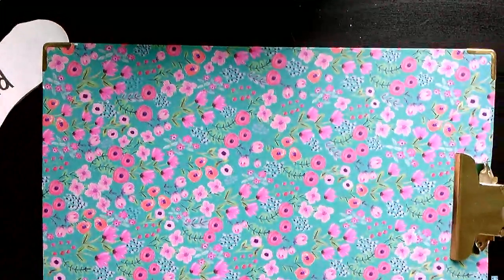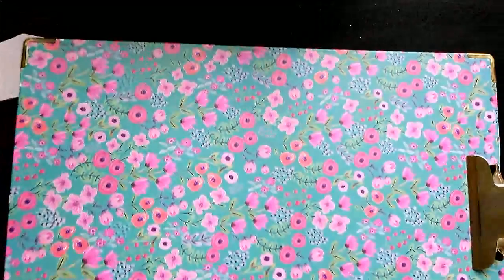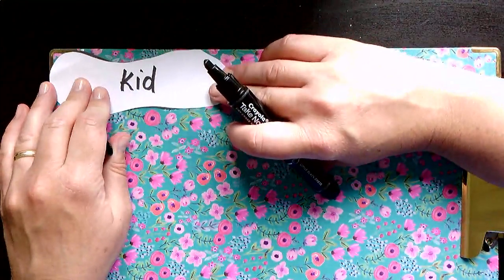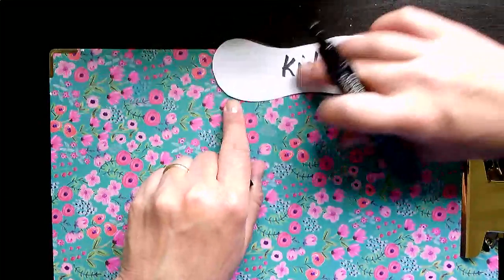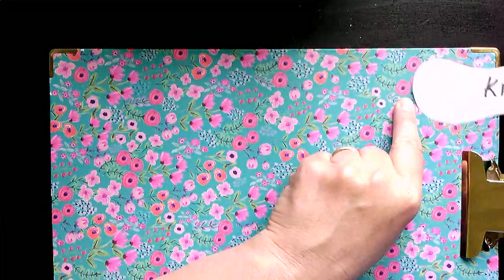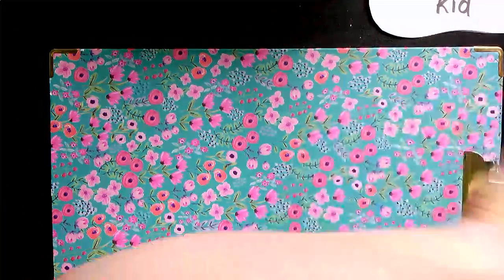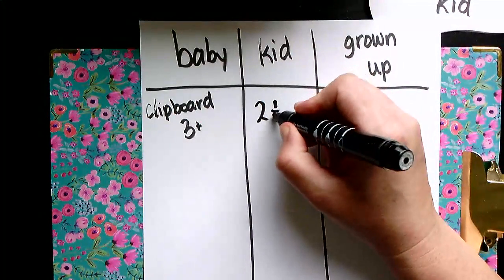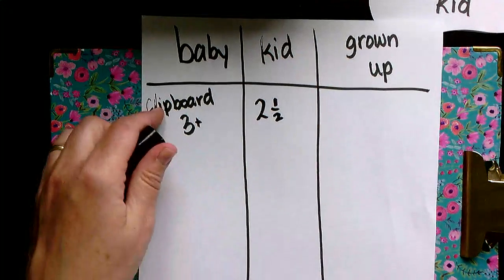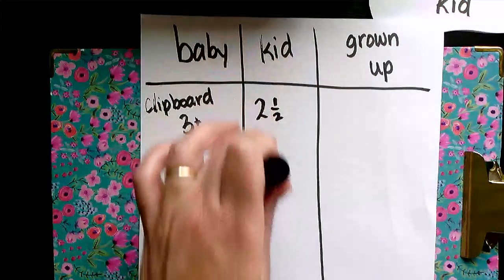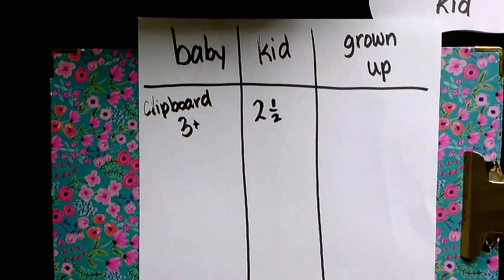The next thing we're going to do is we're going to measure using the kid's shoe. I'm going to measure the same clipboard using the kid's shoe. So remember, start it at the very end. Make sure it's straight. There's one. There's two, and two and a half. So two and a half kid's shoes. So I could write that like this, two and one half. I learned about fractions last week. So the clipboard, the baby shoe, I got three and a half, three, a little bit more than three. For the kid's shoe, I measured about two and a half shoes, and now I'm going to do grown-up shoe.